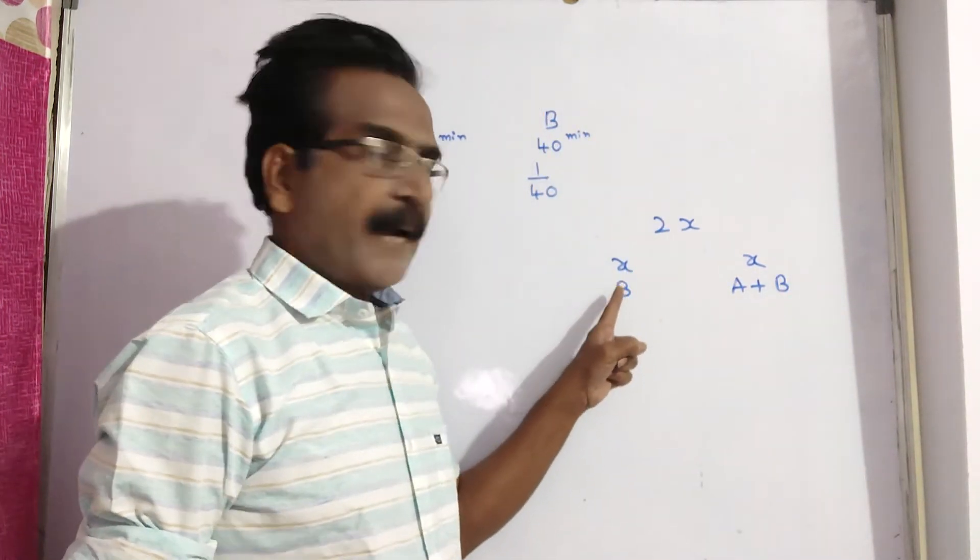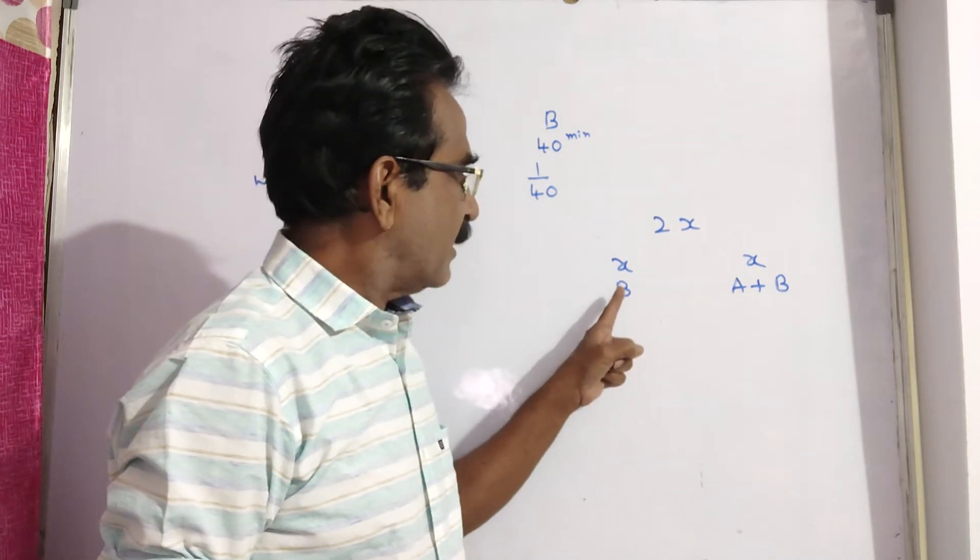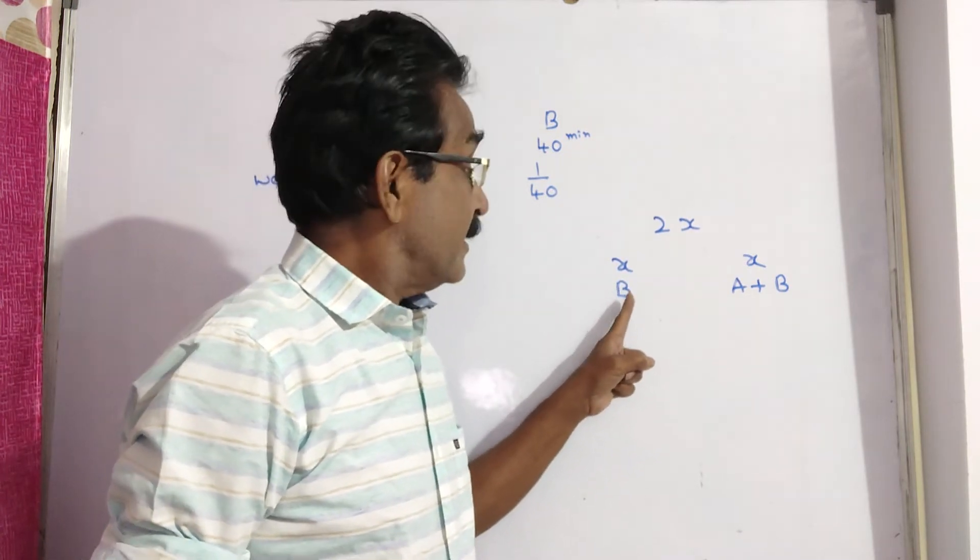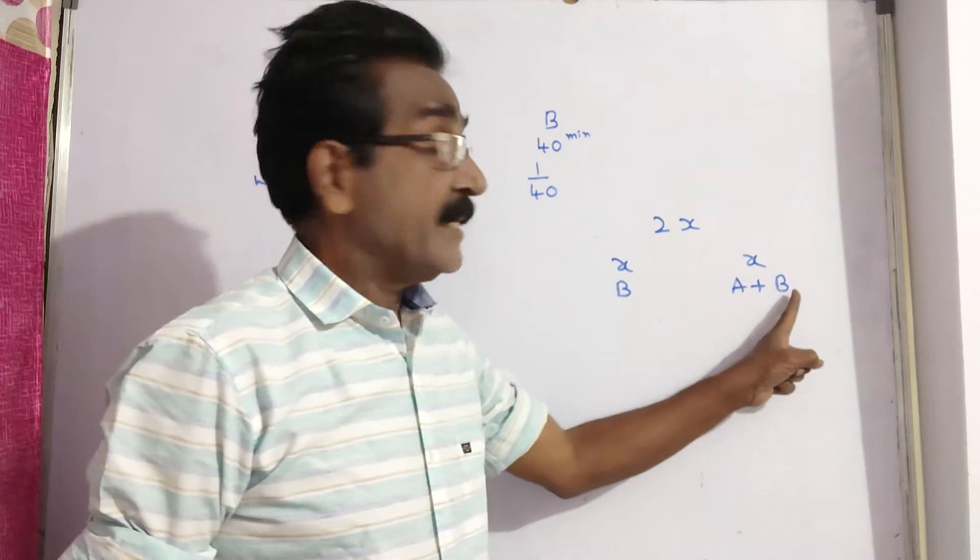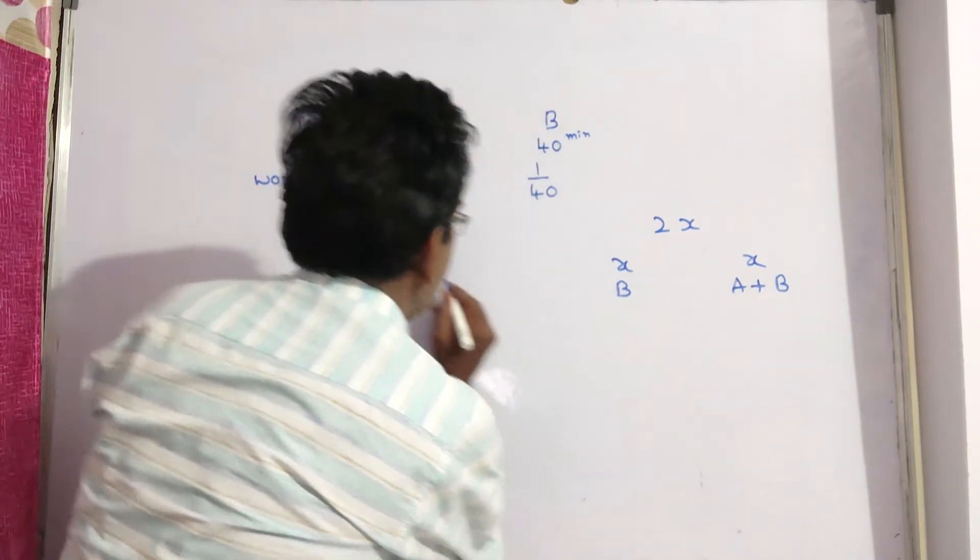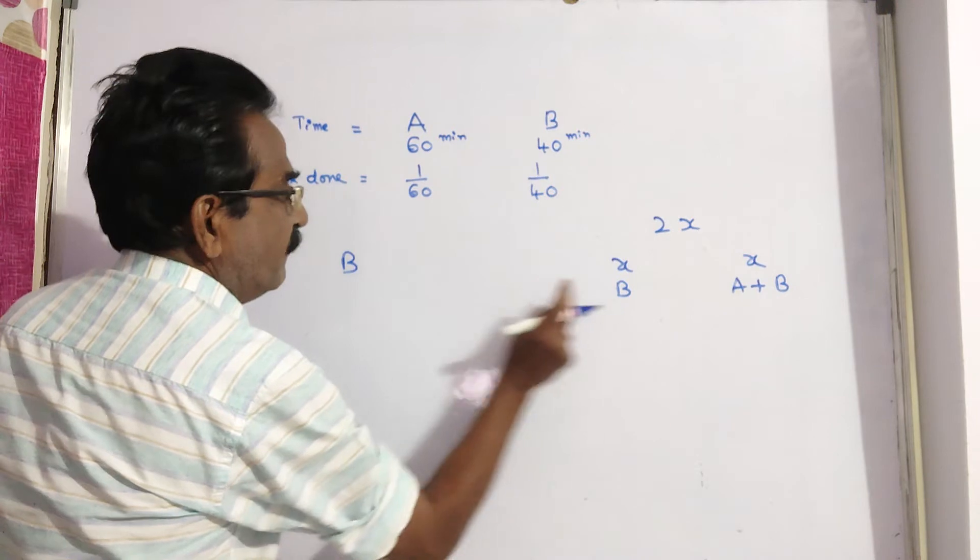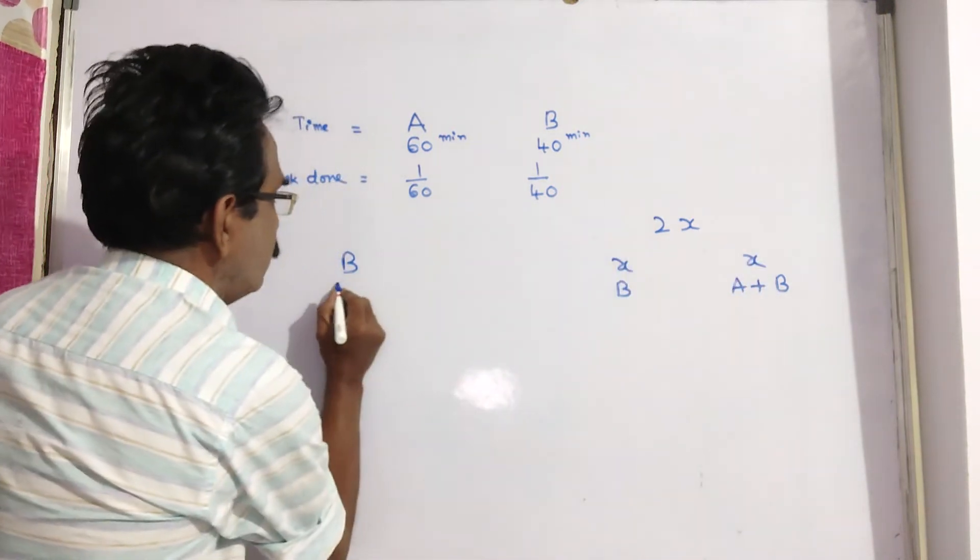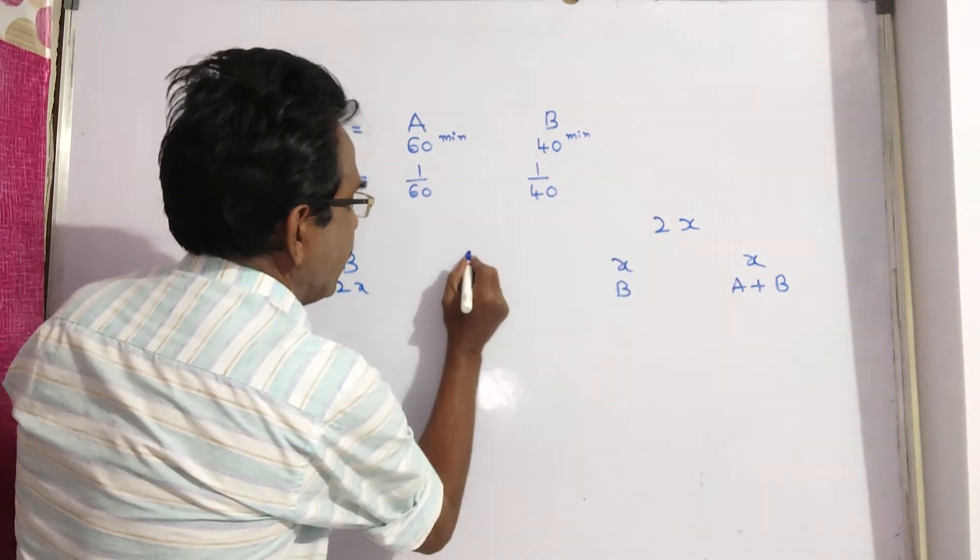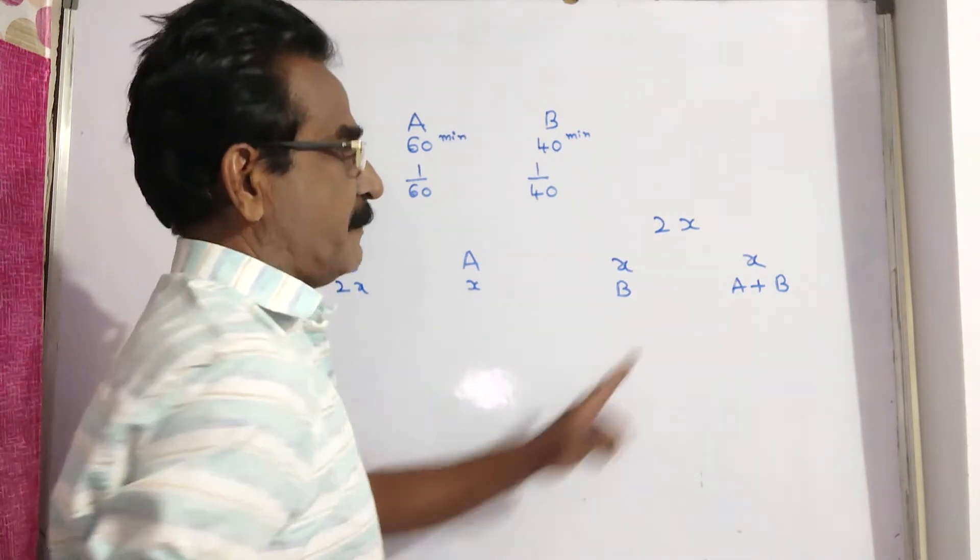That means pipe B worked for x minutes here, x minutes here. So, pipe B worked for 2x minutes and pipe A worked for x minutes only.